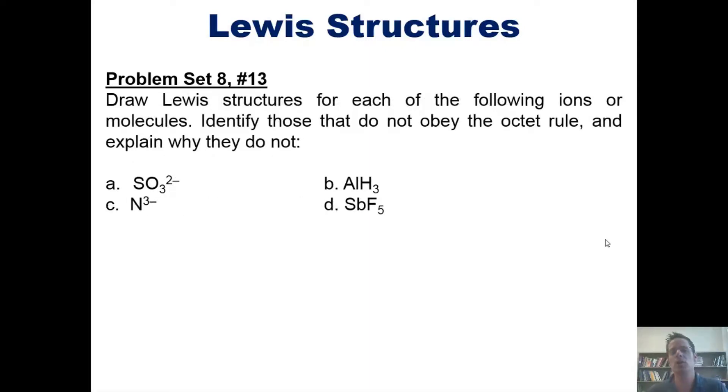In this question, I ask you to draw Lewis structures for each of the following ions or molecules. Identify those that do not obey the octet rule, and then explain why they do not. Once again, I won't answer these questions for you in this video, but we'll post a link to a separate video in which I do. I'm not going to answer all of them. I'll only do two of them, but afterwards, we'll invite you to try the other two on your own.